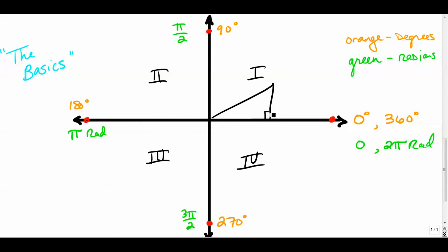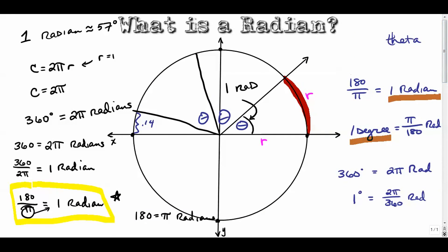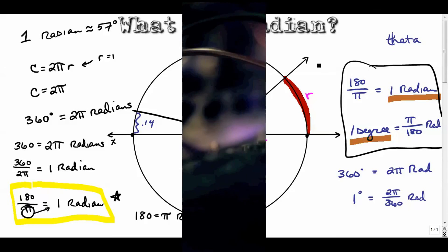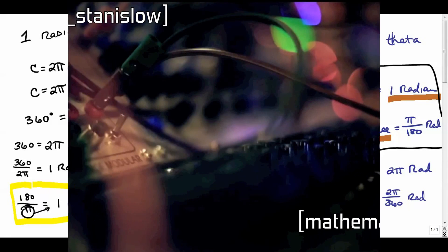That's the basic video on what a radian is. This will be important as we move into the unit circle and start talking about reference triangles, 30-60-90 and 45-45-90. Our next video is going to be how to do these degree-to-radian conversions, so I'll probably use this exact notebook. Thanks for watching.